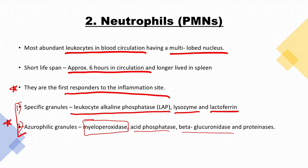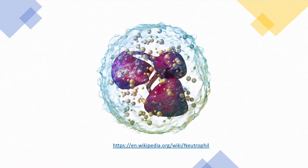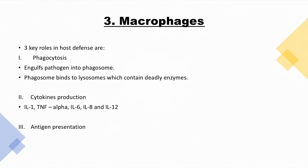Azurophilic granules consist of myeloperoxidase, acid phosphatase, beta-glucuronidase, and proteinases. Myeloperoxidase is highlighted because it plays a very important role in a process called respiratory oxidative burst, which uses oxygen free radicals to kill bacteria. This is a 3D picture of a neutrophil — you can see multiple lobes and small bubbles representing either specific or azurophilic granules.